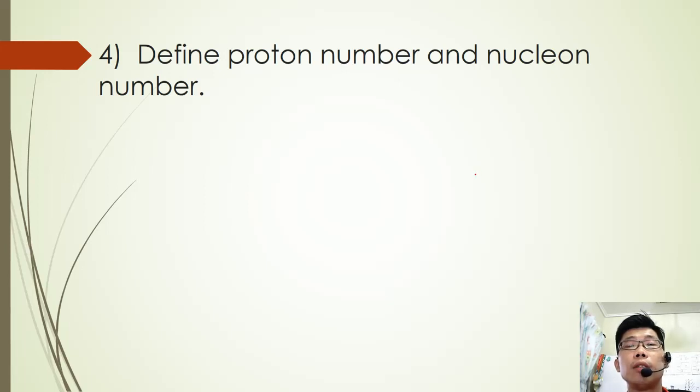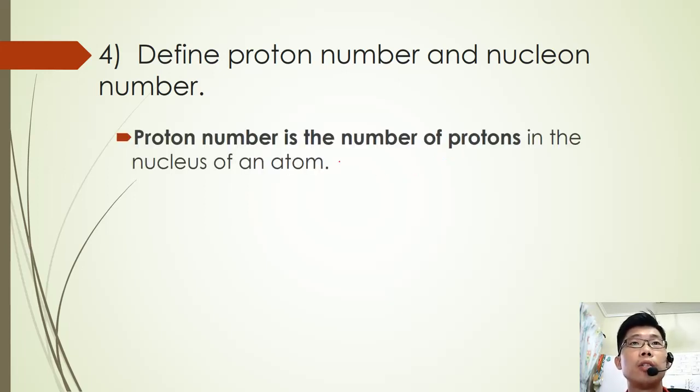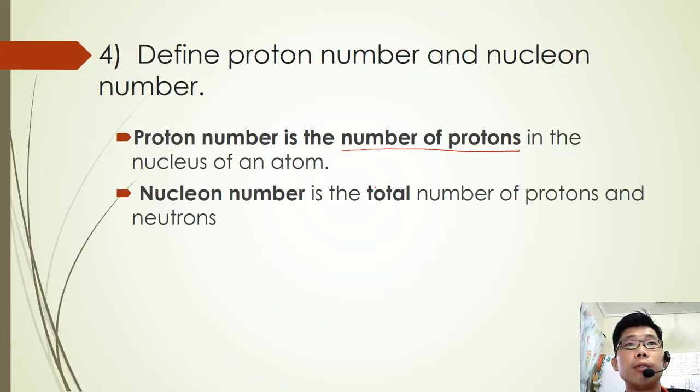For proton number and nucleon number, it's a very easy question and always asked in SPM. So what is proton number? Proton number is the number of protons in the nucleus of an atom. Nucleon number refers to the total number of protons and neutrons.